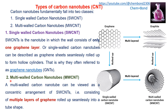Multi-wall carbon nanotubes can be viewed as a concentric arrangement of single-wall carbon nanotubes, consisting of multiple graphene layers rolled up seamlessly into a tube shape. Since graphite is multiple layers of graphene, rolling up graphite produces multi-wall carbon nanotubes. MWCNTs are also obtained when many single-wall carbon nanotubes are combined together.